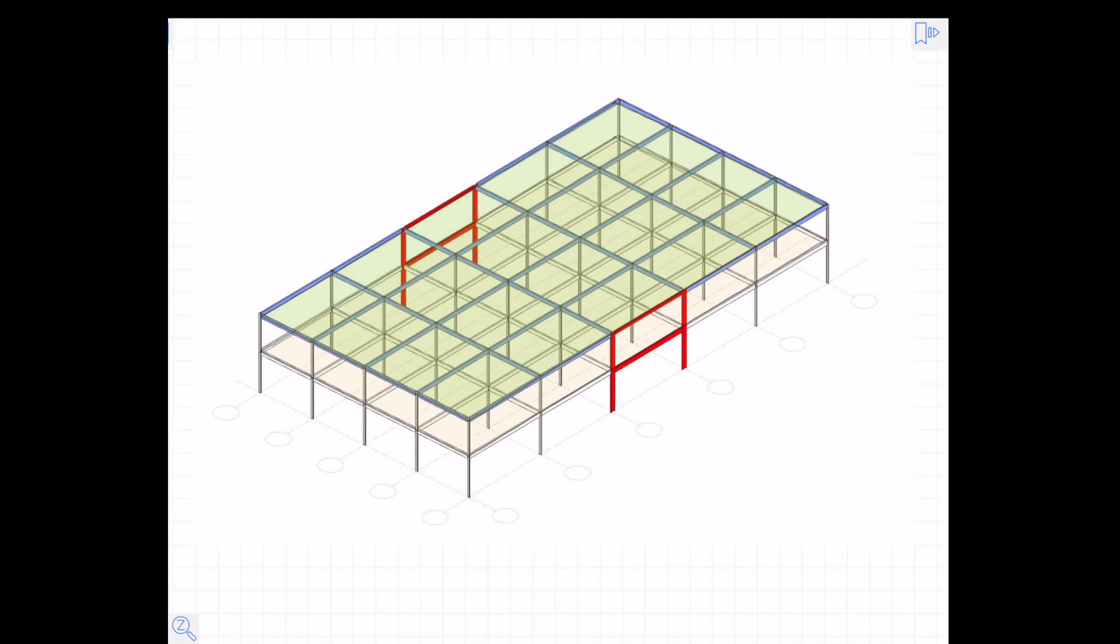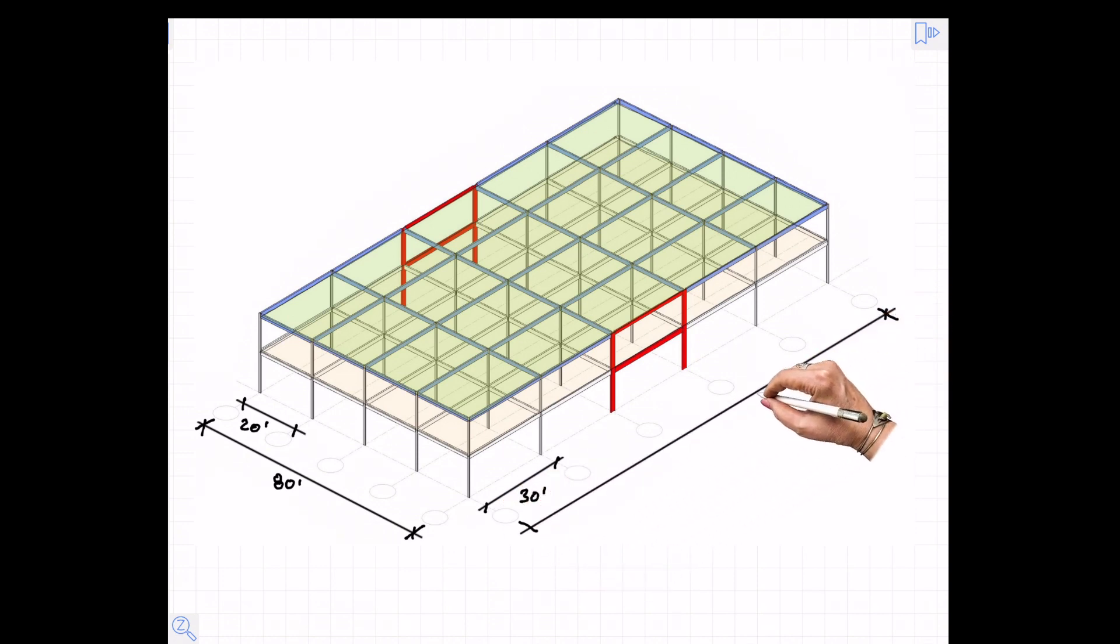So let's begin with some dimensions on the structure. We have 20-foot bays on the short face. Four of those for 80 feet altogether. 30-foot bays on the long face. Five of those altogether gives us 150 feet.